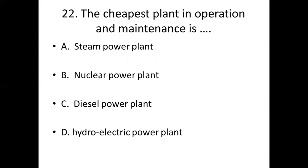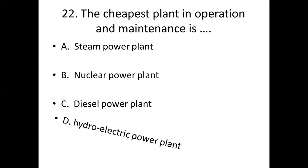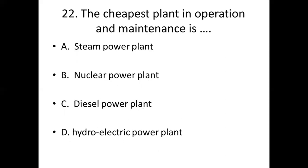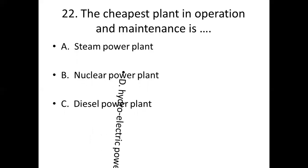Twenty-second bit. The cheapest plant in operation and maintenance is dash. Option A: Steam power plant. Option B: Nuclear power plant. Option C: Diesel power plant. Option D: Hydroelectric power plant. Answer: Option D, Hydroelectric power plant.